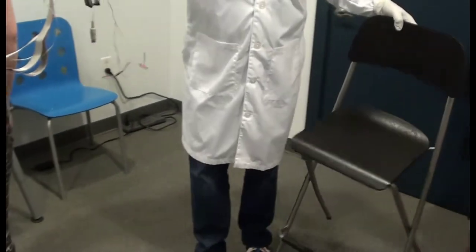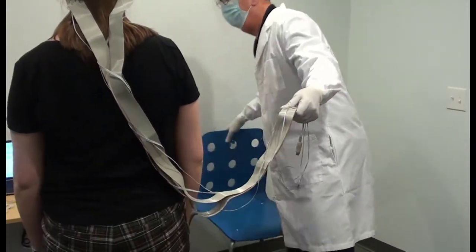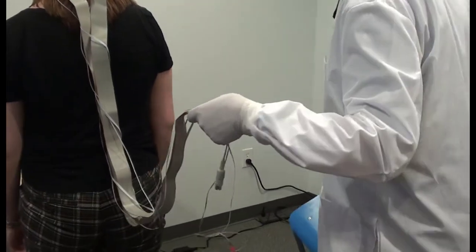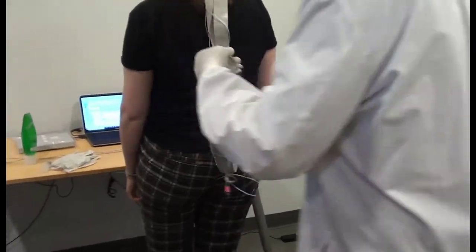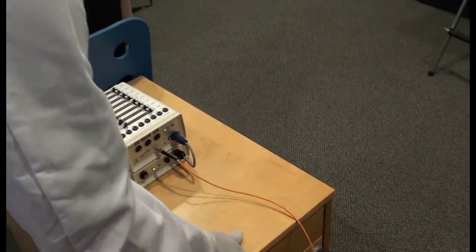After all of the electrodes have been applied and you've organized the cables, if you need to move the participant to a different chair, this is the time to do so. In this example, we used a high stool for electrode prep, but we will use a low stationary chair during the experiment. Roll the cart or cabinet holding the AD box into place behind the participant.